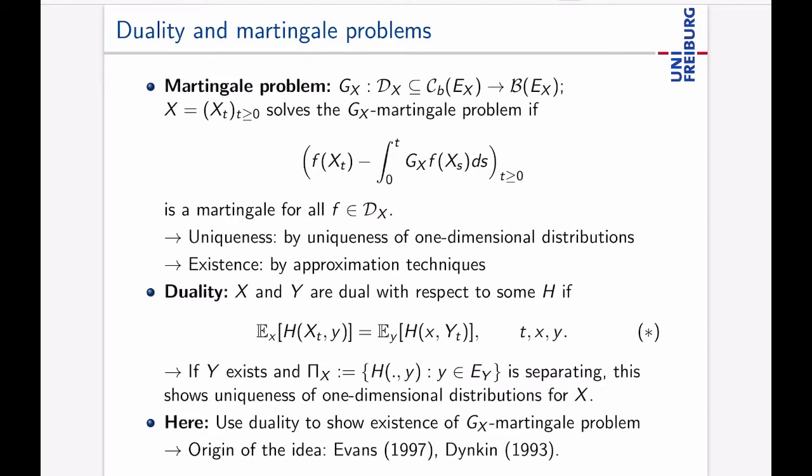So let's get right into it. As you might know, Markov processes are usually described by martingale problems which is the following. You have something which is called a generator or pre-generator which maps functions to functions and a solution of the GX martingale problem is a process or its distribution such that f(Xt) minus integral over Gf is a martingale for all such f which can be plugged into the generator.